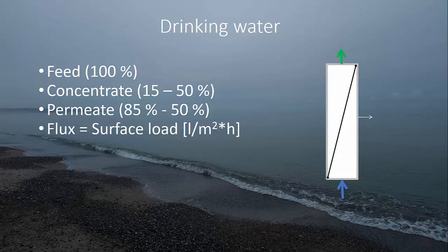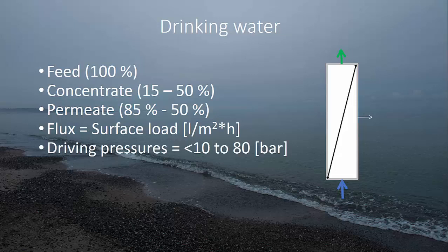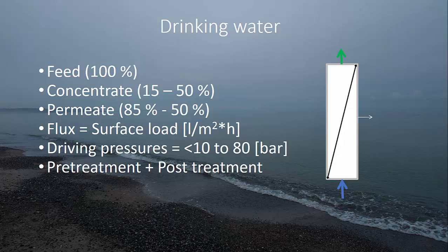An important parameter is surface load or flux, as well as the driving pressure. With reverse osmosis handling very high salinity, you may need to apply up to 80 bar pressure, whereas for fresh water you can typically go below 10 bar. Pre-treatment and post-treatment are also important. For desalination, as in the Buckgrain plant, a very good pre-treatment is needed to protect the reverse osmosis membranes. Since reverse osmosis produces essentially distilled water with no minerals, a post-treatment step is required to add minerals before distributing the water, both for drinking quality and to protect the distribution network.